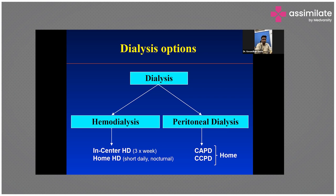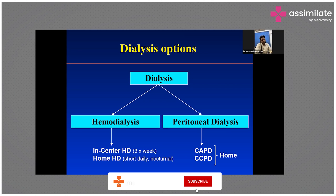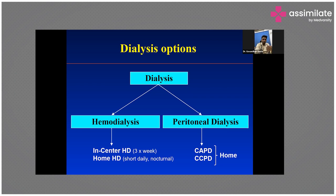Before initiating dialysis, ideally we should offer patients the cafeteria approach — three options to choose from — but this is mainly applicable in Western populations. In India, when an emergency arises with hyperkalemia, metabolic acidosis, fluid overload, or accelerated hypertension, hemodialysis is the only practical option. Due to lack of government, TPA, or insurance support for PD or home hemodialysis, in-center dialysis remains the only option for mid-economy and poor-class patients.